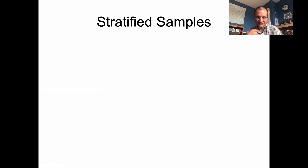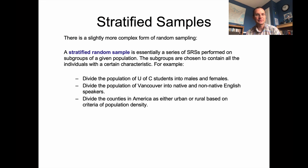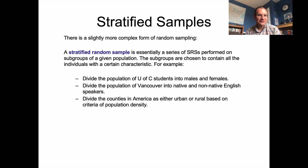Acknowledging, of course, that there's always going to be some flaws with our research — don't bang your head against the wall too much if you wind up doing something that's not perfect. We need to be a little bit forgiving to each other as scientists. I can give you one more terminological definition before I sign off for this part of the lecture. This is a slightly more complex form of random sampling called a stratified random sample. A stratified random sample is essentially a series of simple random samples performed on subgroups of a given population, where these subgroups are chosen to contain all the individuals with a certain characteristic. This is something we actually do fairly often in linguistics research.